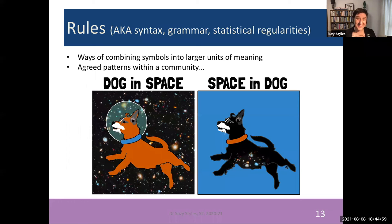The other property that linguistic systems have is rules. We might like to call a rule syntax or grammar or a statistical regularity, but all we mean when we refer to symbols and rules is that the rules allow us to combine our symbols into larger units of meaning.